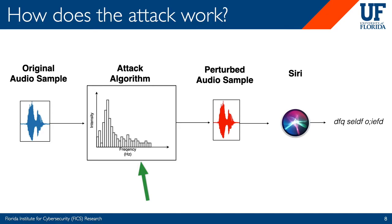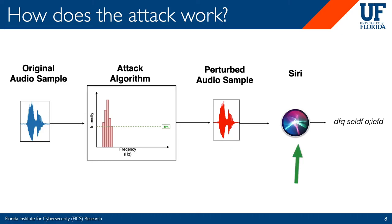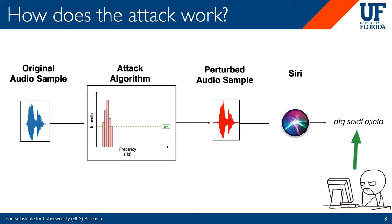To determine which frequencies to remove, we employ a binary search approach. We set a threshold at 50% of the maximum intensity in the signal. All frequencies with less intensity than the threshold — shown in green — are discarded by being set to zero. The remaining frequencies, shown in red, are used to reconstruct a perturbed audio sample, which is given to the model, and the model outputs a garbage transcription. We want to throw out as few frequencies as possible while still being able to evade the model, because throwing out fewer frequencies allows us to maintain high audio quality.